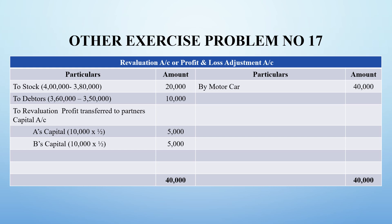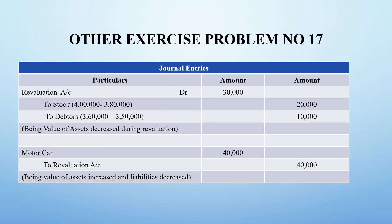Now we will go to the journal entries. They ask us to pass journal entries. We have to prepare the debit side items first. Revaluation account is debited to stock account and debtor account, so the total is 30,000 rupees. And the next one for the credit side: motor car account is debited to revaluation account.